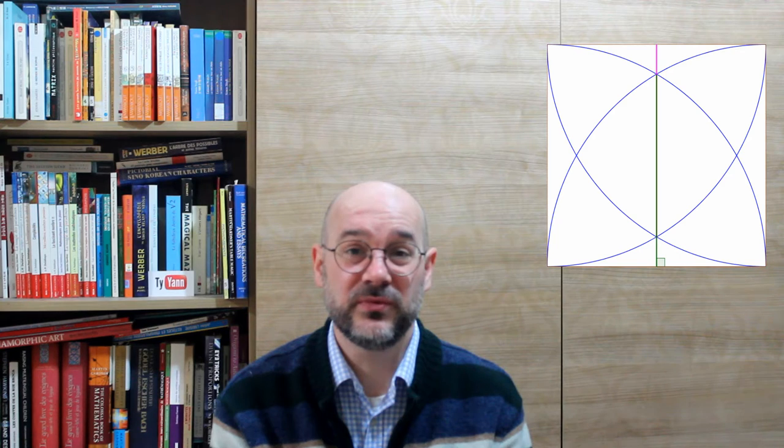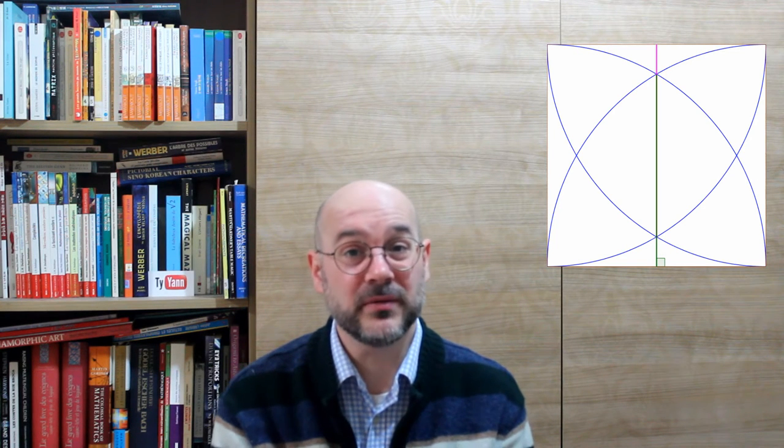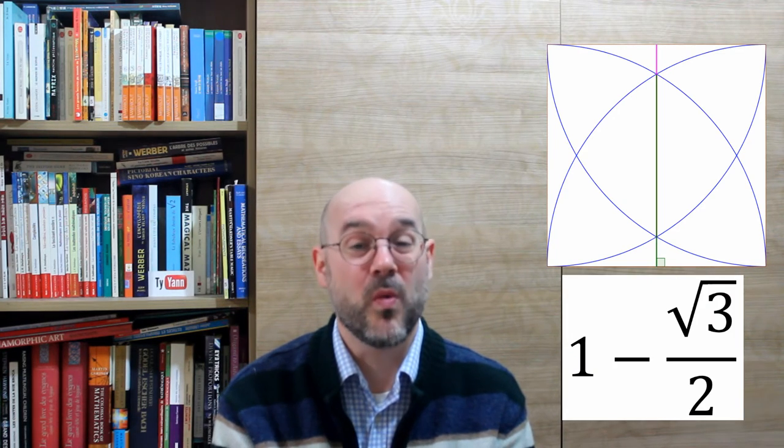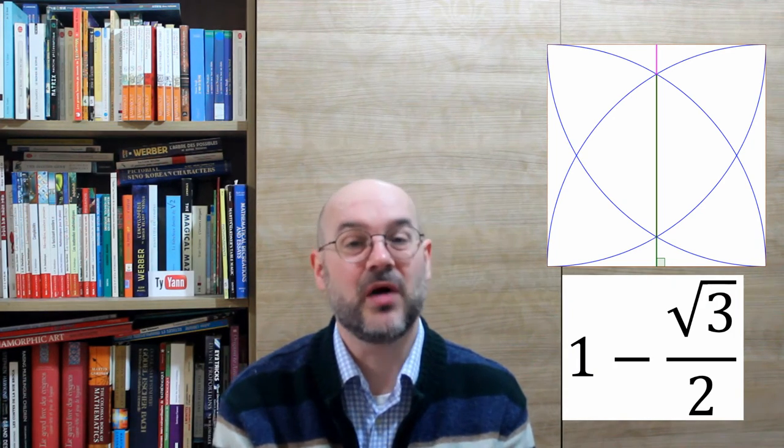Because we know the full length of the line is 1, so this was going to be 1 minus the square root of 3 over 2.